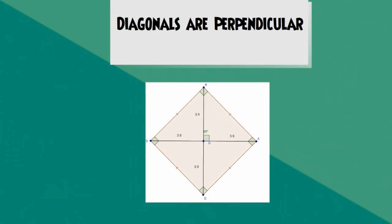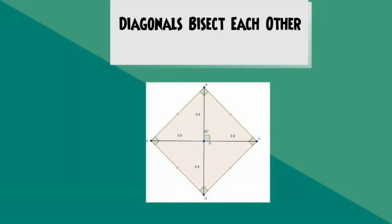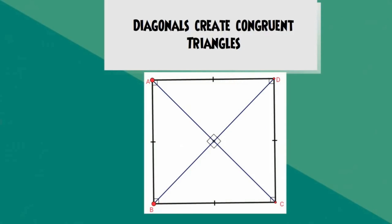The diagonals of a square are perpendicular and create four right angles. The diagonals also bisect each other. The diagonals also bisect opposite angles and create equal 45-degree angles. As a result of the diagonals bisecting opposite angles, they create triangles that are congruent.